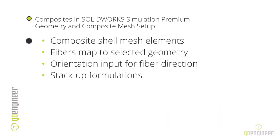Moving into what's included inside SOLIDWORKS, we'll summarize how we set up the geometry for these special composite elements and how we define the mesh. We'll see how the fibers map to the geometry we select. It uses what we call a shell element, which is defined on a surface — either a surface body or a selection of faces on a solid body. That geometric selection determines what direction the fibers will go. We get control over orientation based on a zero-degree angle reference, so we can set minus 45, plus 45, or 90 degrees to change it throughout the stack-up.